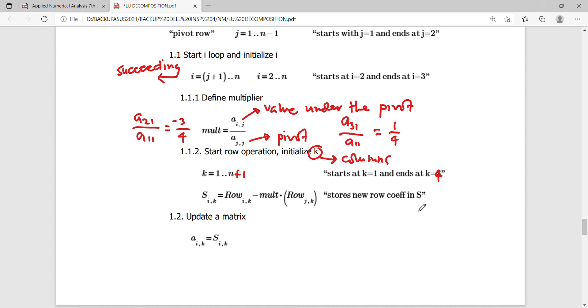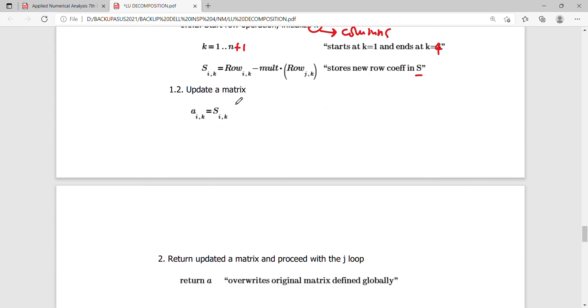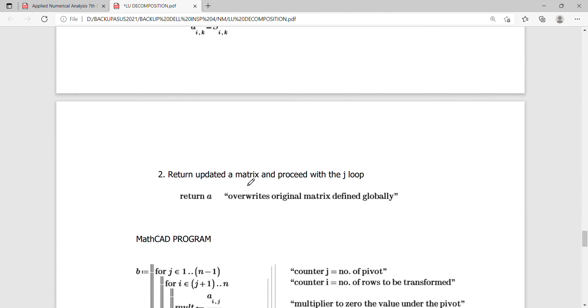And then we store it at a temporary storage S, row coefficient storage. And this will be used to update the matrix that will look back into a and proceed with the next J, which is J equals 2. So we are counting J from 1 to 3 minus 1, or 2. And of course, after updating the matrix, we have to return it back to the original matrix and override it before proceeding with the next J loop.